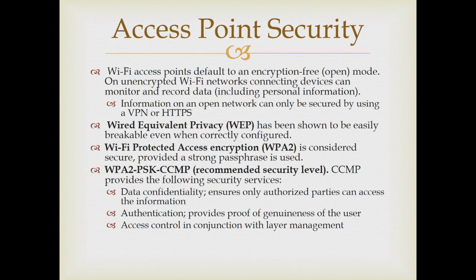We need to talk a little about security. The default for most access points is an unencrypted mode. On unencrypted networks, any station can monitor and record data. The best thing you can do on unencrypted networks is make sure your internet connections are through HTTPS links, or that you're on a virtual private network. For the access point in your RV, make sure you've employed WPA2 security with a strong passcode, and always use HTTPS for your connections to the internet.